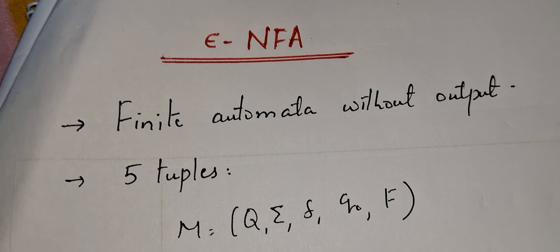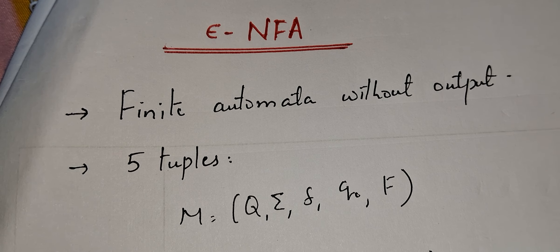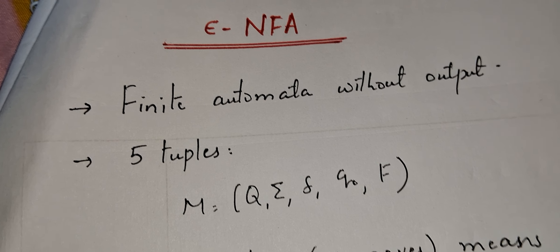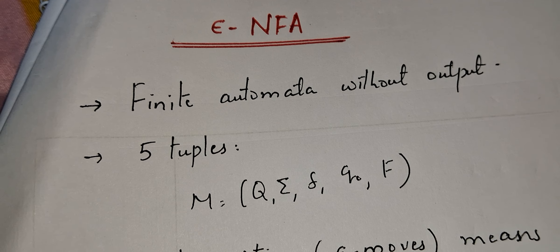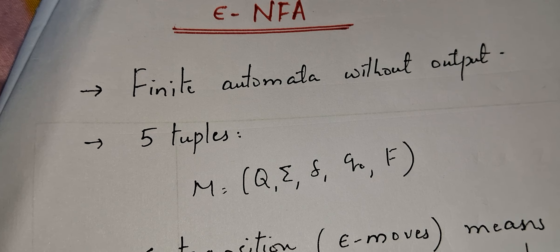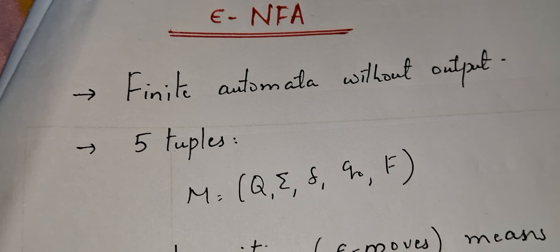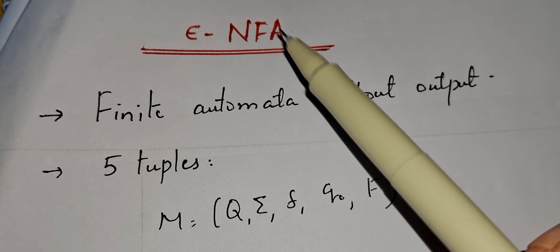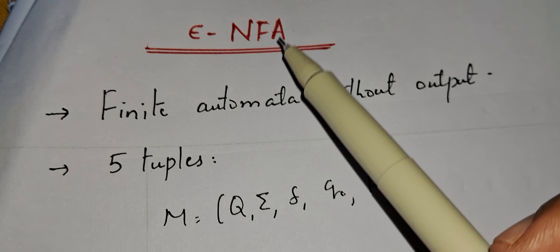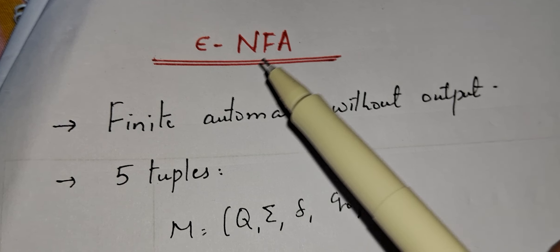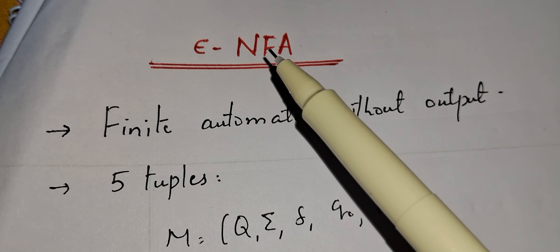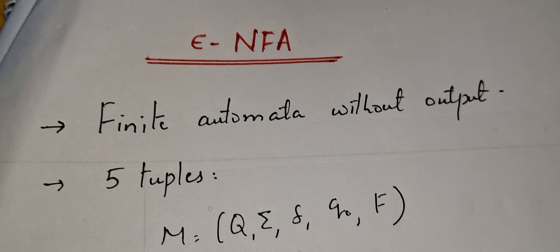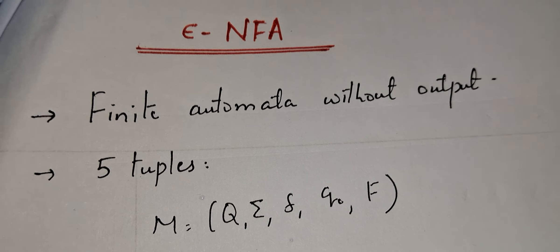The next topic is epsilon NFA. In the previous videos I already explained finite automata with outputs. There are three types: DFA (deterministic finite automata), NFA (non-deterministic finite automata), and epsilon NFA. These three automata belong to the category of finite automata without output.